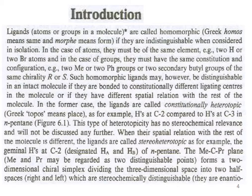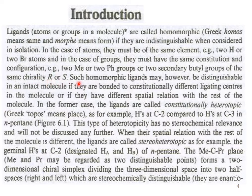Let's start with the introduction. Ligands are groups in the molecule — atoms or groups in a molecule — are called homomorphic. The Greek word 'homos' means 'the same' and 'morph' means 'form.' Compounds having the same form are called homomorphic if they are indistinguishable when considered in isolation. In the case of atoms, they must be of the same element, for example two hydrogen or two bromine atoms. In the case of groups, they must have the same constitution and same configuration.